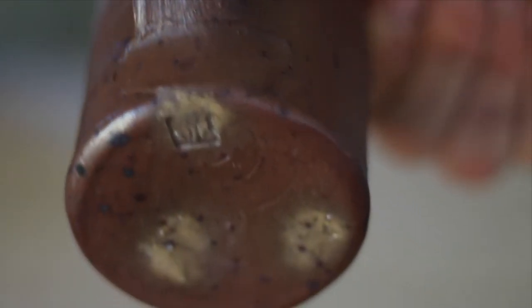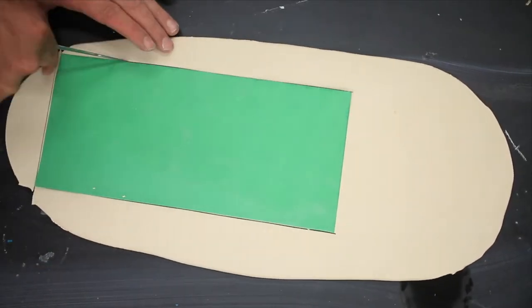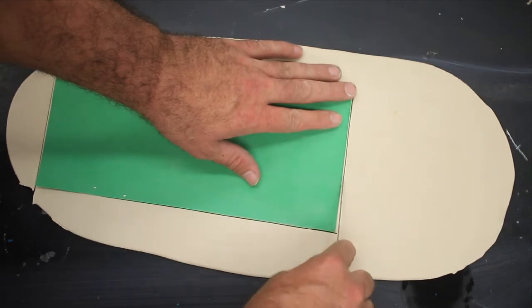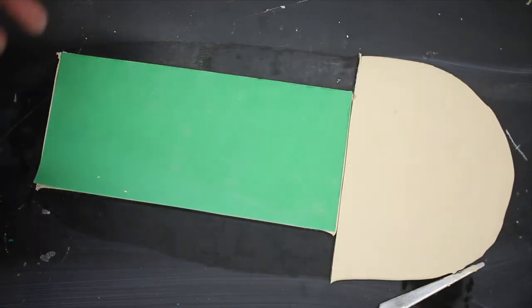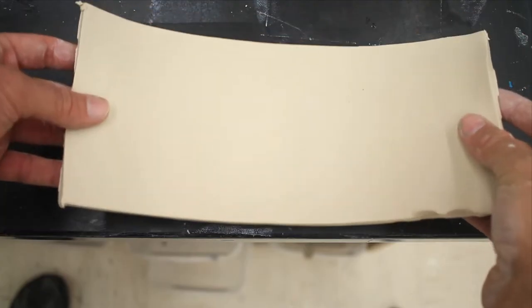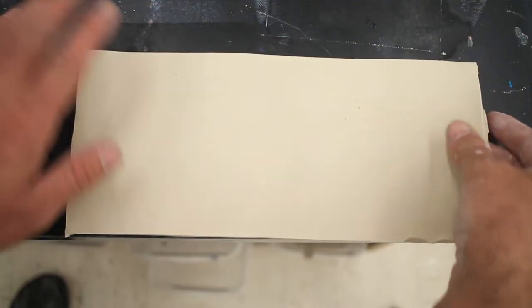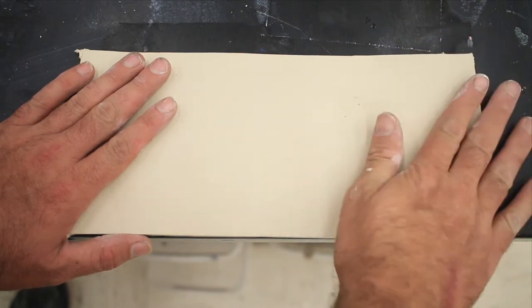To begin, roll out a slab on the slab roller and use a template to cut out a rectangle. Here, my rectangle is about six inches tall and about twelve inches wide. If you want a taller cup, use a taller template.